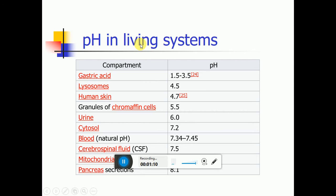pH examples: Gastric acid is having pH 1.5 to 3.5. Lysosome is having pH 4.5. Human skin is having pH 4.7. Urine is having pH 6.0. The cytoplasm is having pH 7.2. Blood is having pH 7.34 to 7.45, and seawater is having pH 7.5.